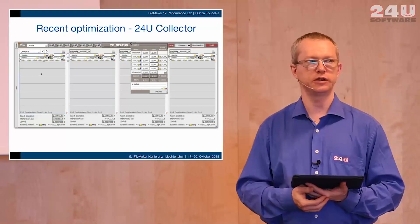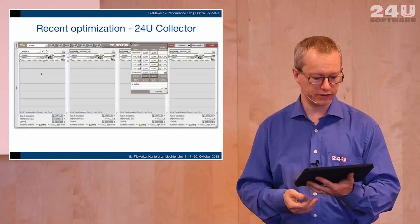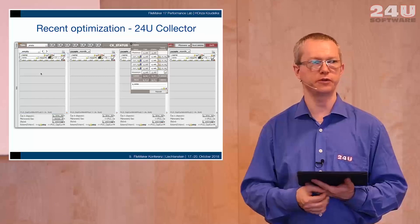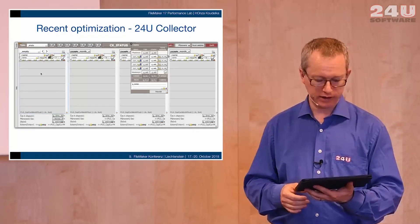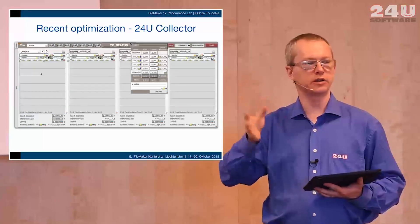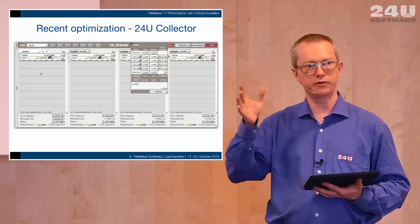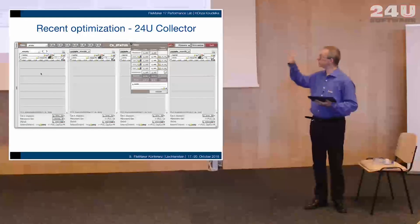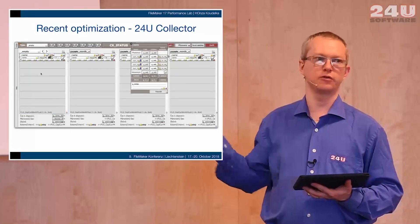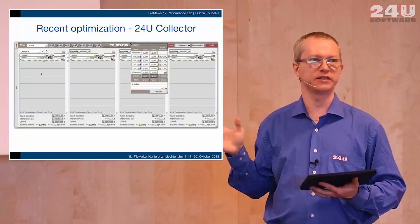This is our own optimization that we did on our own solution we call Collector. This is an application that we use for project management for our own software development projects. As part of it we have this layout with four portals, and we use it for managing and allocating capacity of our development team for four consecutive months. As you can see, there are many objects on the layout, but one thing I want to focus on here is the network performance impact, because working with this layout from a slow connection was a very unpleasant experience.